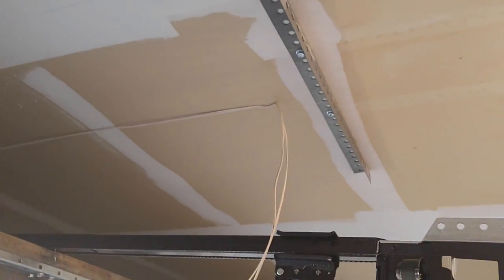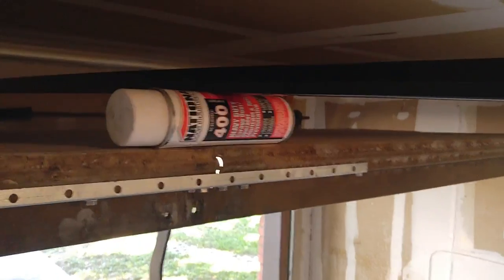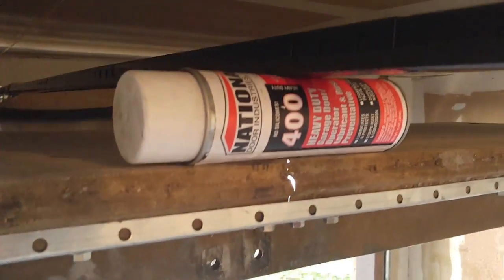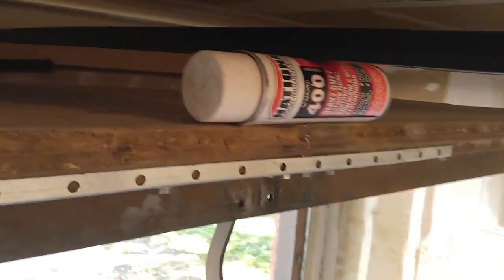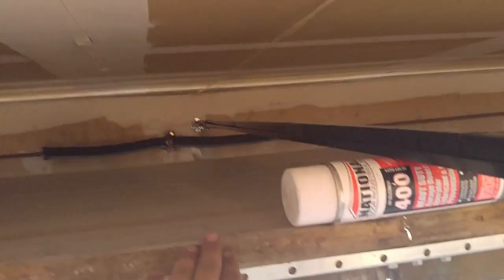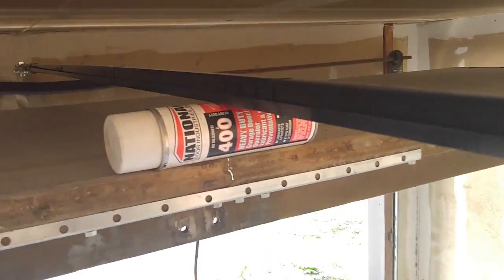Now we're going to measure for our drops. All right guys, so I like to get a spray can, set it on top of my door there and rest my opener on it. Trust me, it's fine. I like that spacing right there from top of door to the bottom of the rail.